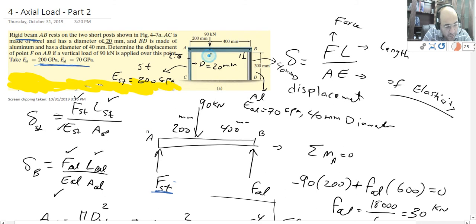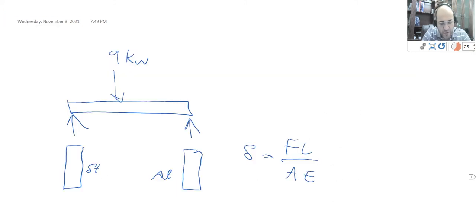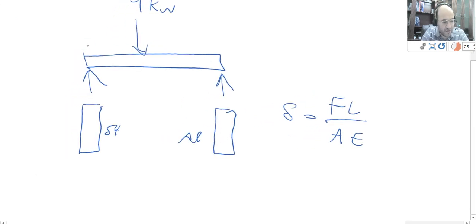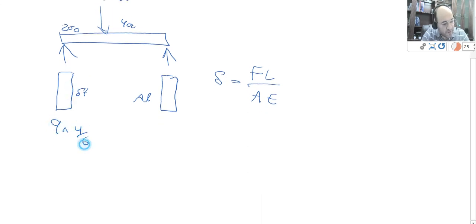The question asks that if you look at point F, what would be the vertical displacement of point F? To answer this, the 9 kN is much closer to the steel than the aluminum, meaning that the majority of the force applies to steel and less to aluminum — this is proportional to the distance. The distance here is 200, here is 400, and the overall distance is 600. So 4 over 6 goes here: 9 times 4 over 6 gives 6 kilonewtons to steel.